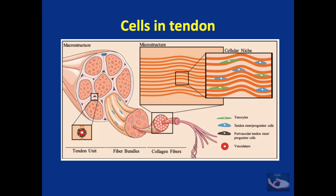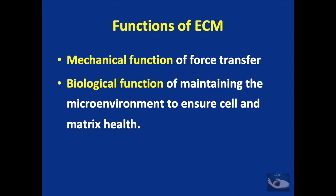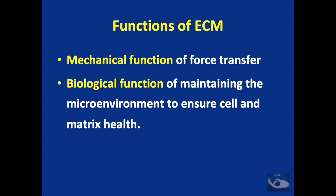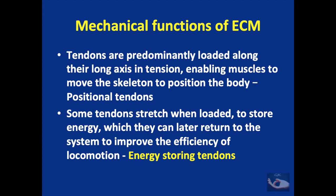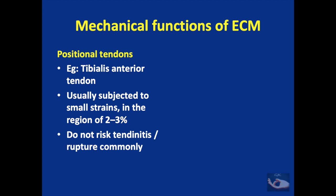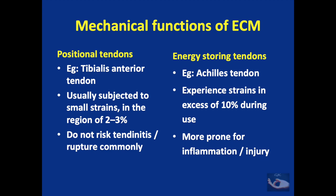This diagram shows the cells present in the interfascicular zones. The extracellular matrix has mechanical functions of force transfer and biological functions of maintaining the microenvironment for cell and matrix health. Tendons are predominantly loaded along their long axis in tension, enabling muscles to move the skeleton — these are known as positional tendons. Some tendons additionally store energy and return it to improve locomotion efficiency; these are energy-storing tendons. The tibialis anterior is a positional tendon, subjected to smaller strains and less prone to tendinitis or rupture. The tendo Achilles is an energy-storing tendon, experiencing strains in excess of 10%, making it more prone to inflammation and injury.